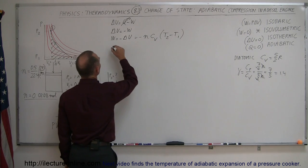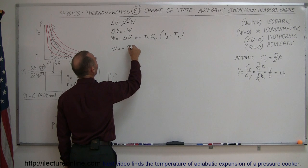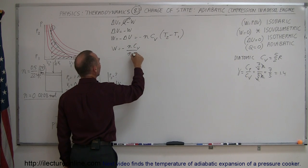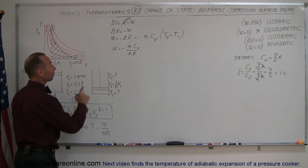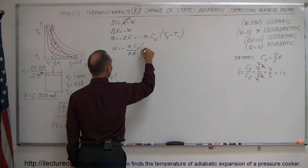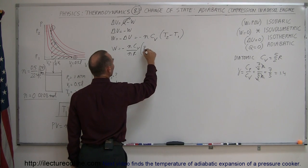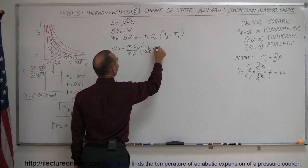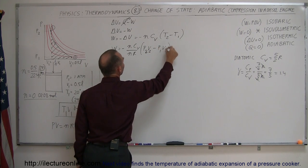So we're going to replace T2 and T1 by PV over nR. Now when we do that, notice that we get work done is equal to minus nC_V over nR, because I can factor out the nR for the two terms. Instead of T2 I'll have P2V2 minus P1V1.